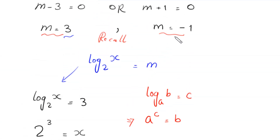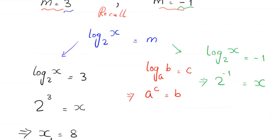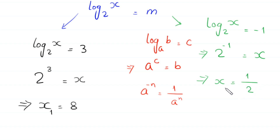When m equals negative 1, the equation becomes log base 2 of x equals negative 1. Using the property a to the power negative n equals 1 over a to the power n, this gives x equals 1 over 2. So we have two solutions of this equation: x equals 8 and x equals 1/2.